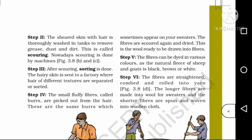Step 6: The fibers are straightened, combed and rolled into yarn. The longer fibers are made into wool for sweaters and the shorter fibers are spun and woven into woolen cloth. The processing of fiber into wool can be represented as follows.